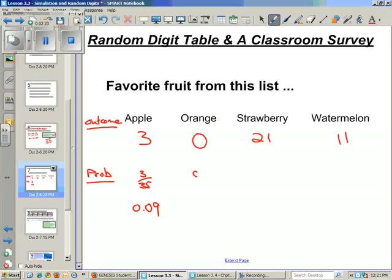Probability somebody chose orange? Well that's an easy one. Zero. Strawberries, twenty-one out of thirty-five, point six. Are these all perfect nice numbers? Okay. Eleven watermelon, eleven out of thirty-five, rounds to point three one. Alright. We'll leave it at that.